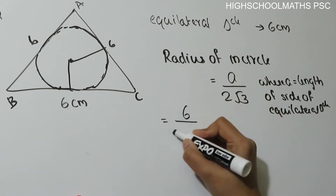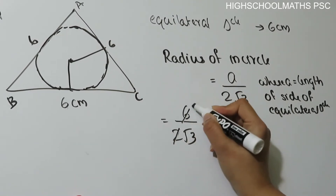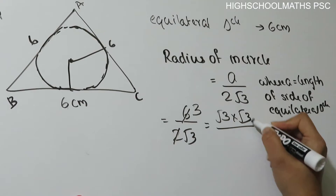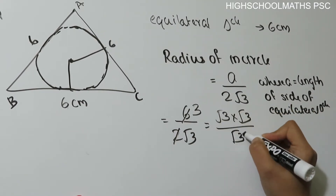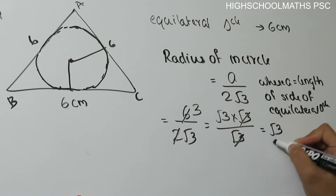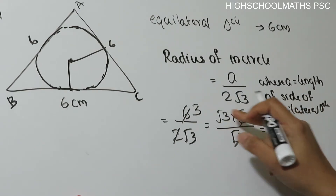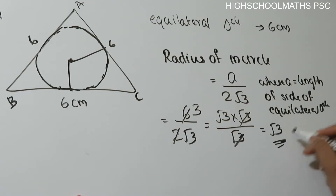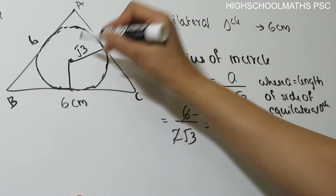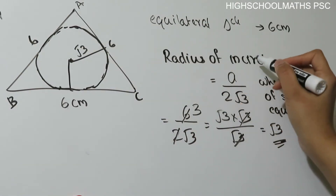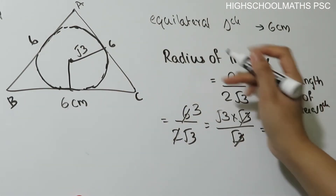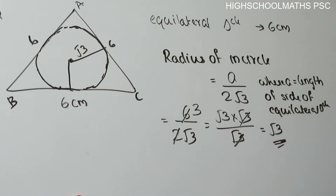r is equal to 6 by 2√3. Now we cancel: √3 divided by √3 cancels. The radius of the incircle is a by 2√3. This is the equation: for an equilateral triangle with side a, r = a/(2√3).